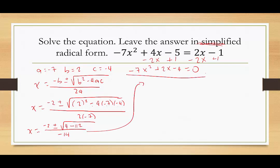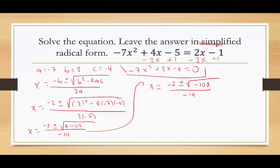We get x equals negative 2 plus or minus the square root of negative 108 divided by negative 14. Now, because the 2 is negative and the 14 is negative, we can actually divide everything by negative 1 — that would turn both the 2 and the 14 positive, and the plus or minus signs would just flip. So we can drop the negatives; it's just a little cleaner. As I'm simplifying the radical, I'm also going to drop the negatives to get 2 plus or minus.